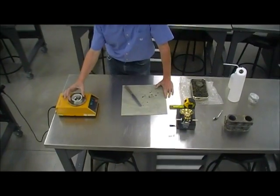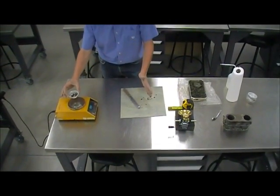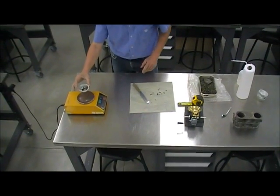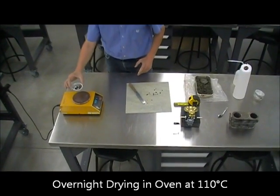The next step, normally you may have enough sample to do a couple of these determinations so that you can average them. And this goes into the oven.